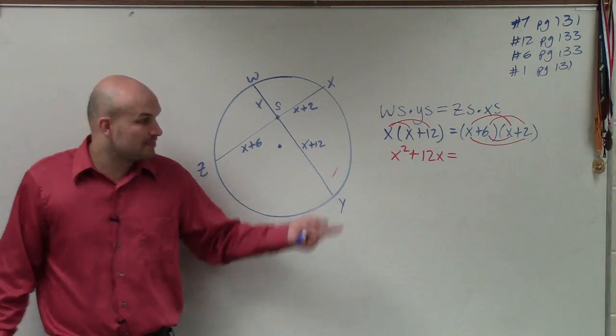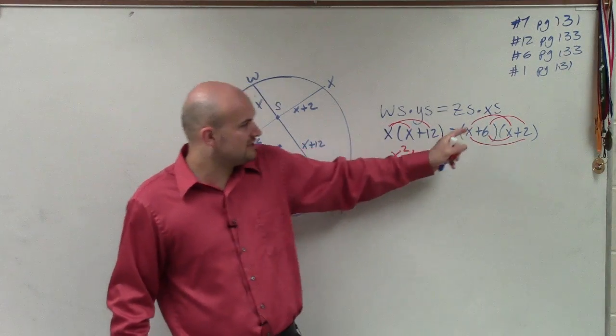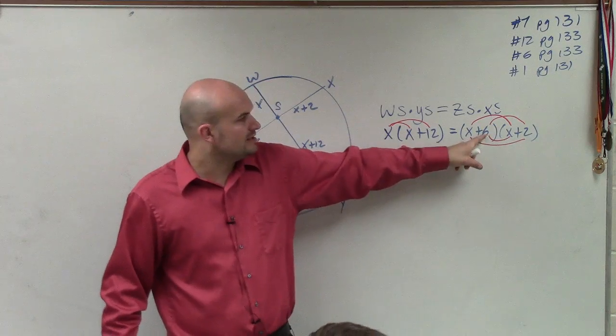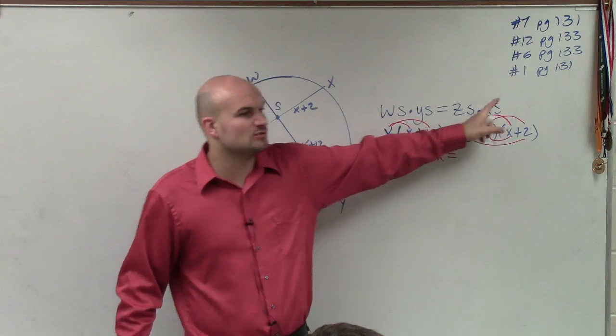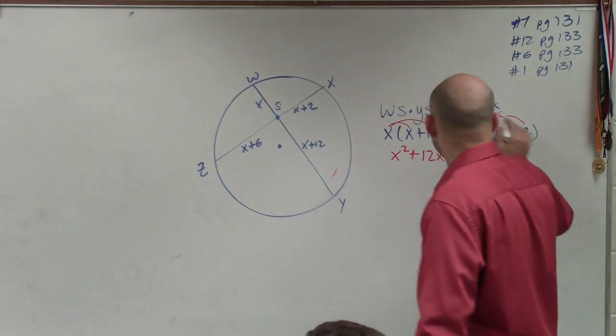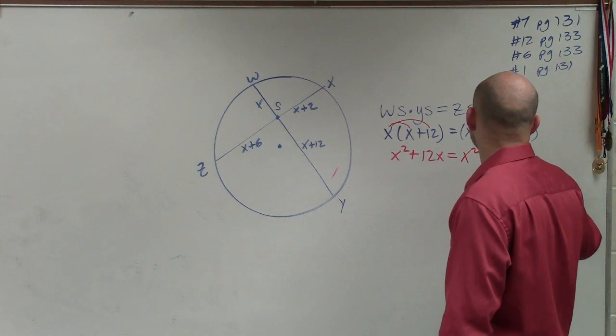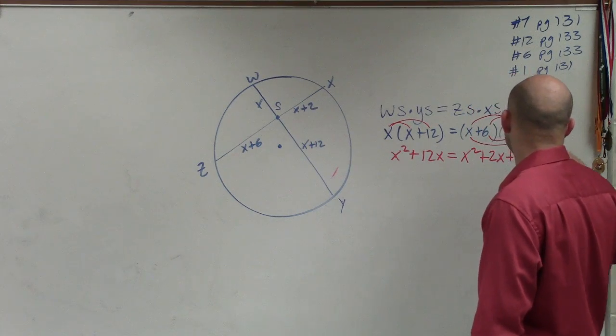And all FOIL is, is applying the distributive property. So if you want to apply the distributive property, notice the first term multiplies to the first, first term multiplies by the second. Second term multiplies by the first, multiplies by the second. So that's all I'm really doing. So x times x is x squared plus 2x plus 6x plus 12.